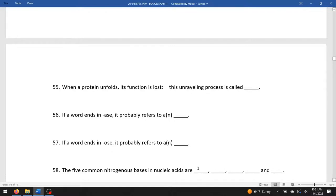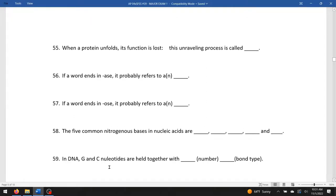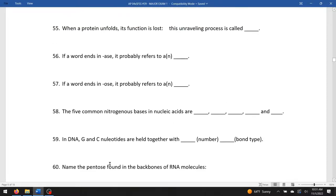In DNA, G and C nucleotides are held together with three bonds and the bond type is hydrogen bonding. Name the pentose sugar found in the backbones of RNA. The R tells you the answer: ribose.